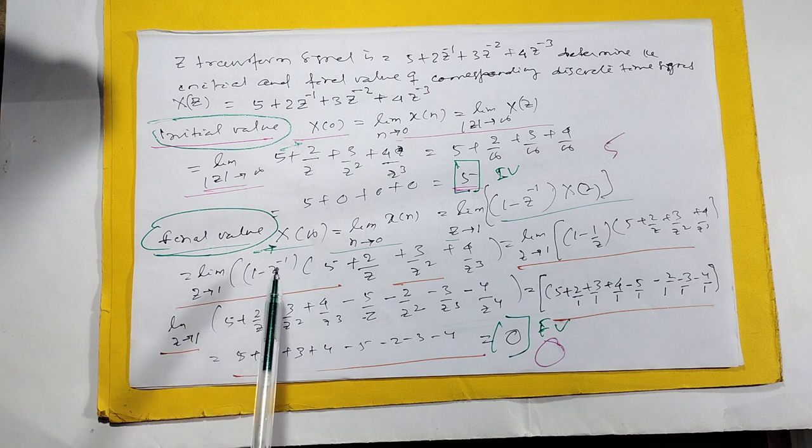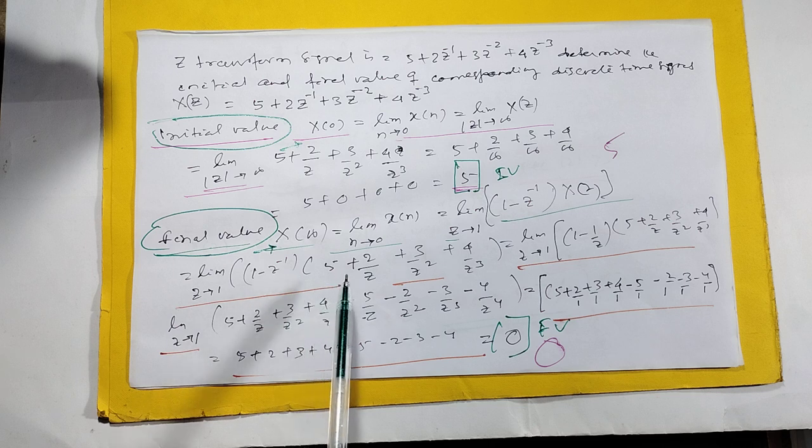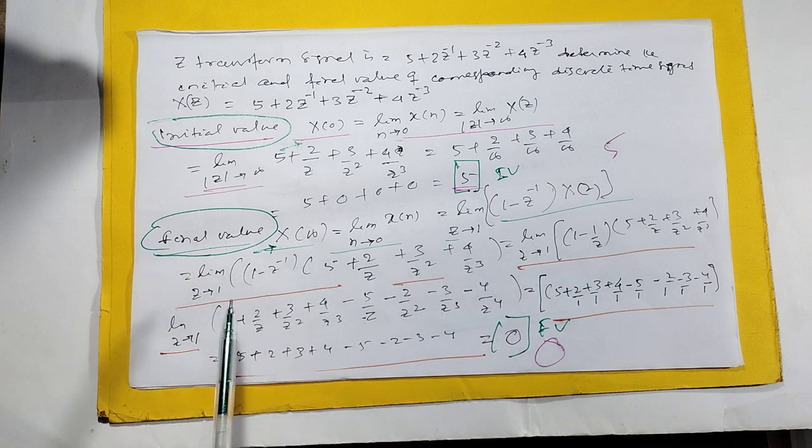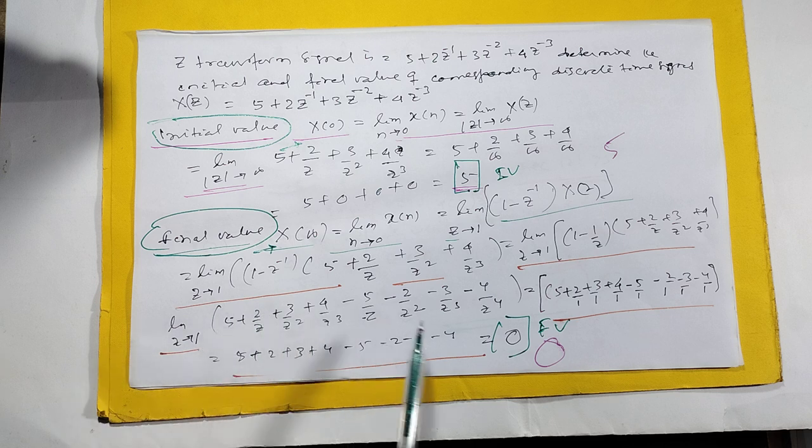5 + 2/Z + 3/Z² + 4/Z³. Then multiply this. Both terms multiply. After multiplication, if you solve it.